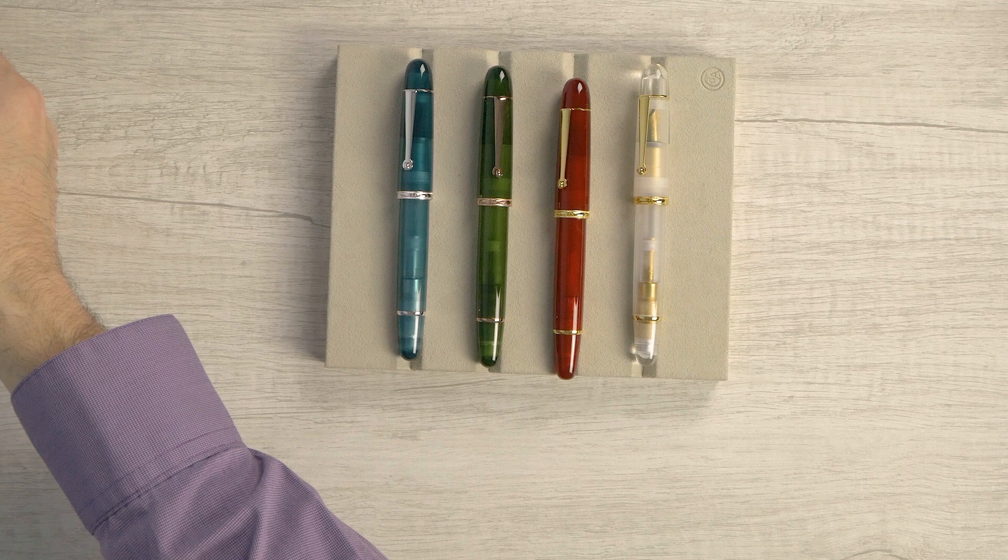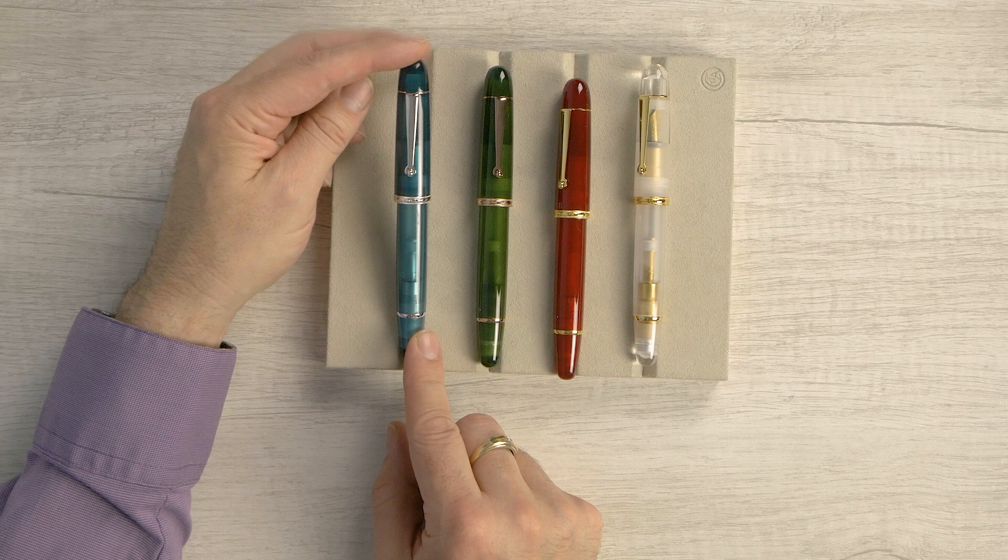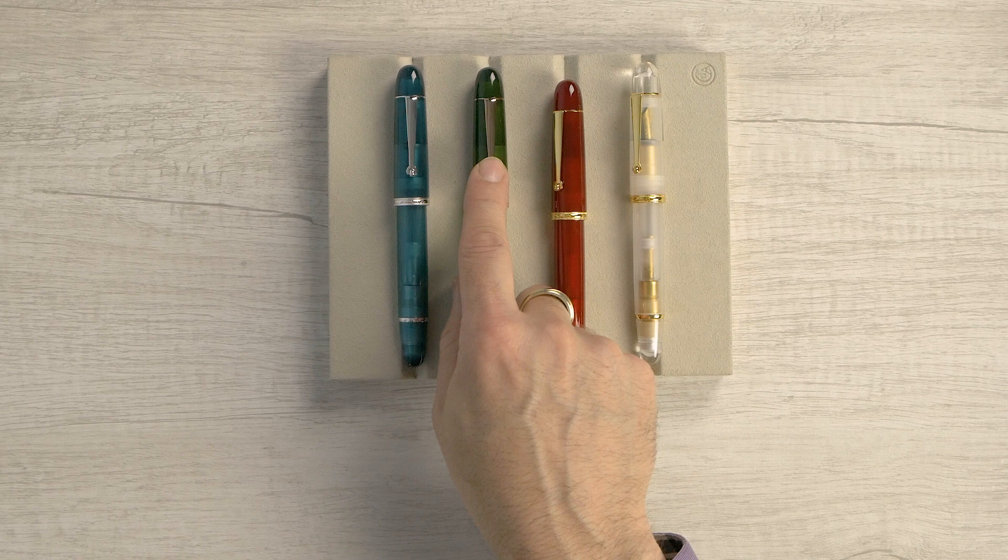So we've got the Deep Sea, which is this lovely translucent teal almost. Rainforest, this kind of olive green, but it has this rose gold trim. It's really, really nice looking.